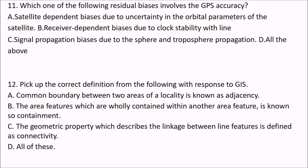Next question: which one of the following residual biases involves GPS accuracy? The answer is D — all of them. Because of satellite-dependent biases due to uncertainty in orbital parameters of the satellite; receiver-dependent biases due to clock stability; and signal propagation biases due to atmospheric perturbation and disturbances. So the answer is D — all of them.